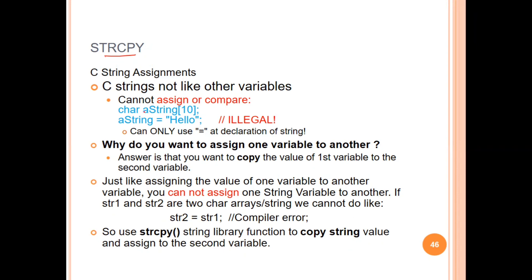This is a character array or string declaration, and that string array is assigned with a value in this step. This particular process is not allowed in C programming. The initialization process can be done in the declaration statement itself, like providing equals and giving the message 'hello' here — that is possible. But assigning after declaration is not possible in C programming.